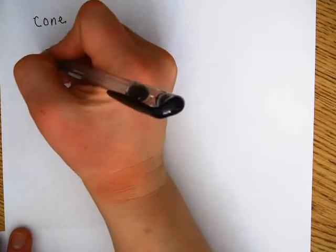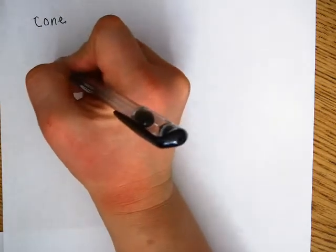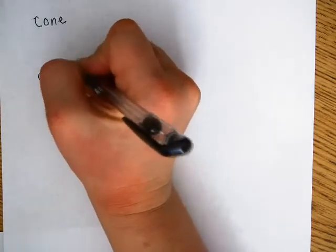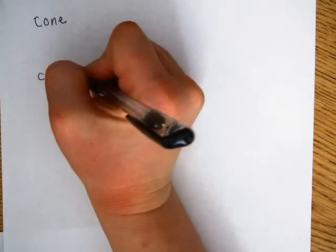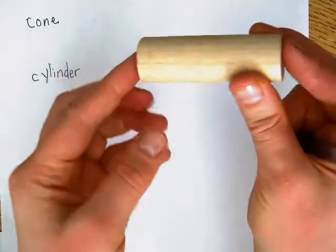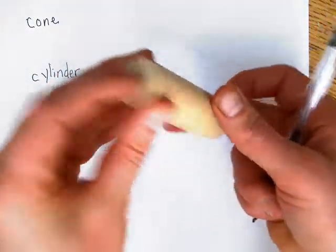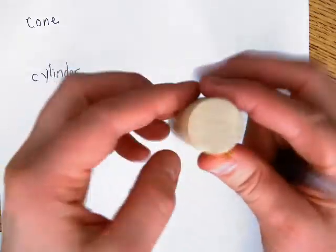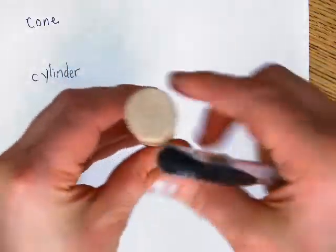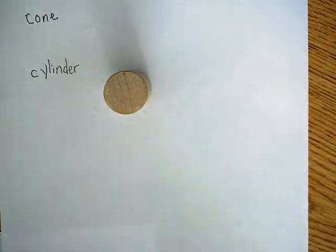The next word is cylinder. A cylinder is round on the bottom, but it's equal — it's even all the way through. Round on the bottom, round on the top, and it goes around and meets at that area. So you can see it's equal the whole way through.